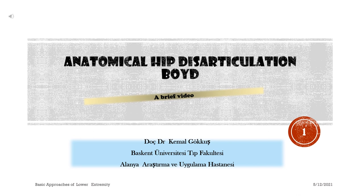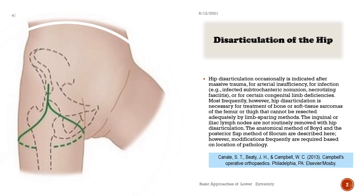Hip disarticulation is occasionally indicated after massive trauma, for arterial insufficiency, for infection — for example, infected sub-trochanteric non-union, necrotizing fasciitis — or for certain congenital limb deficiencies.